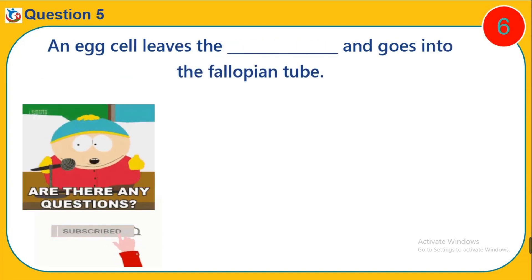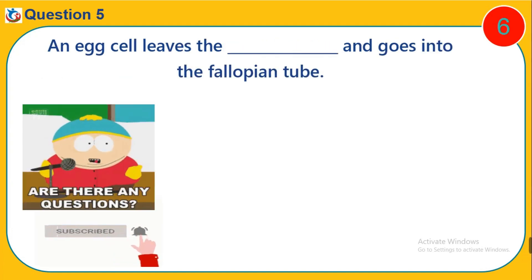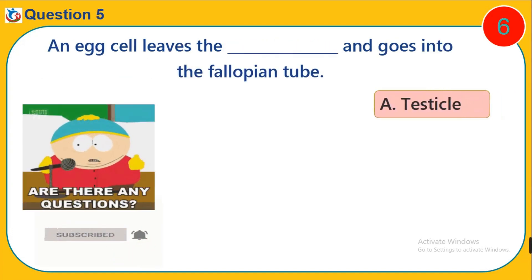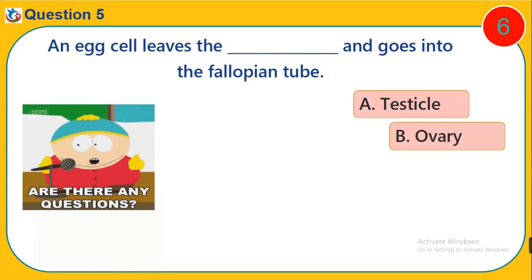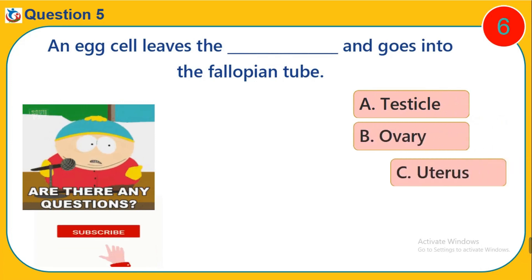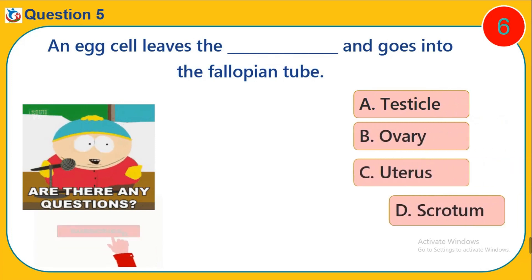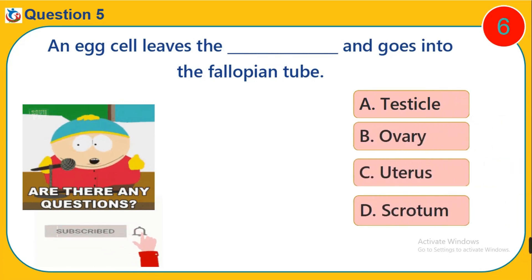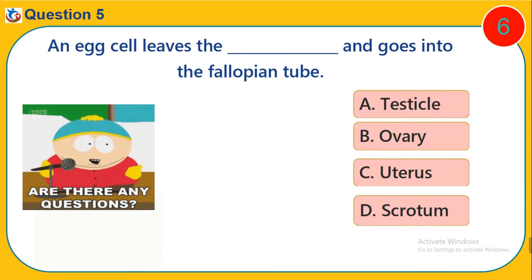Question 5. An egg cell leaves the dash and goes into the fallopian tube. A. Testicle. B. Ovary. C. Uterus. D. Scrotum.